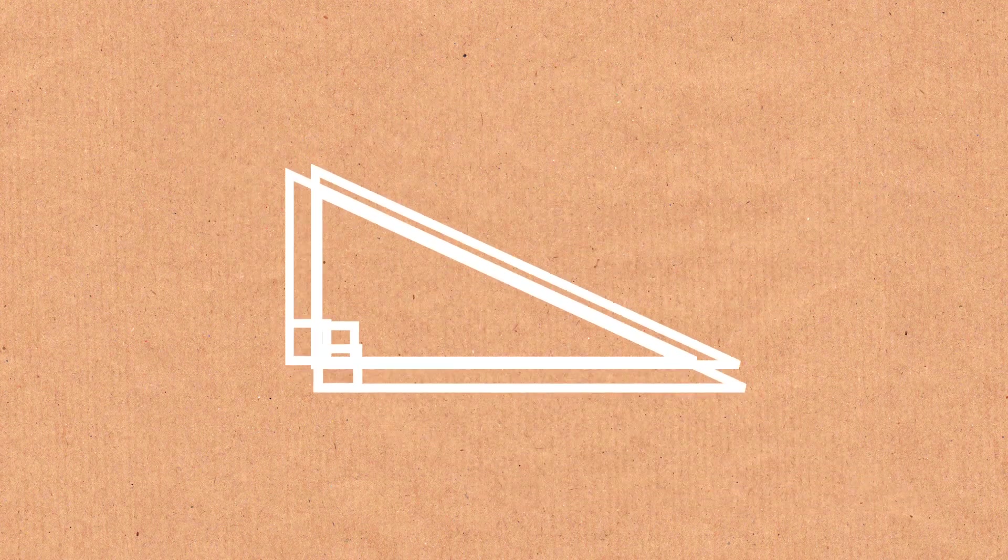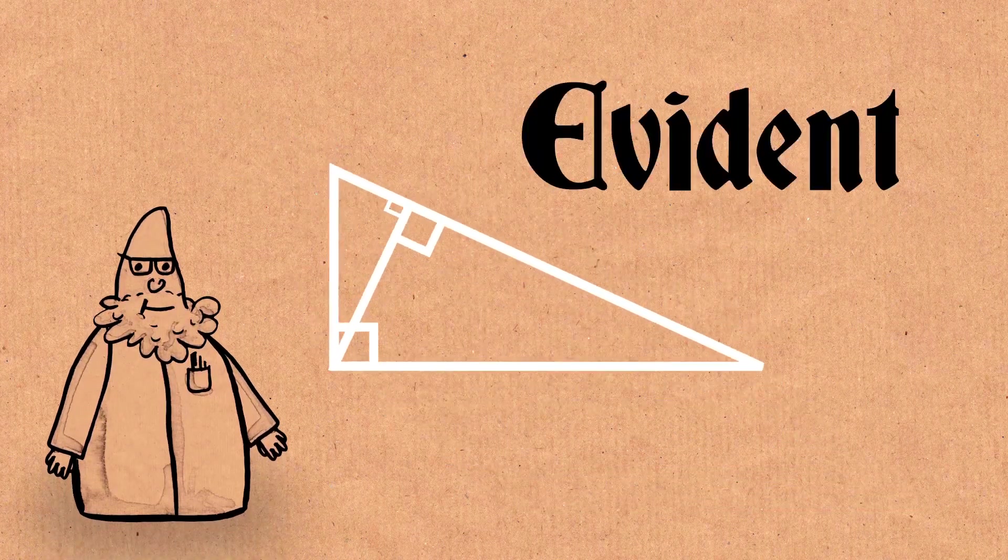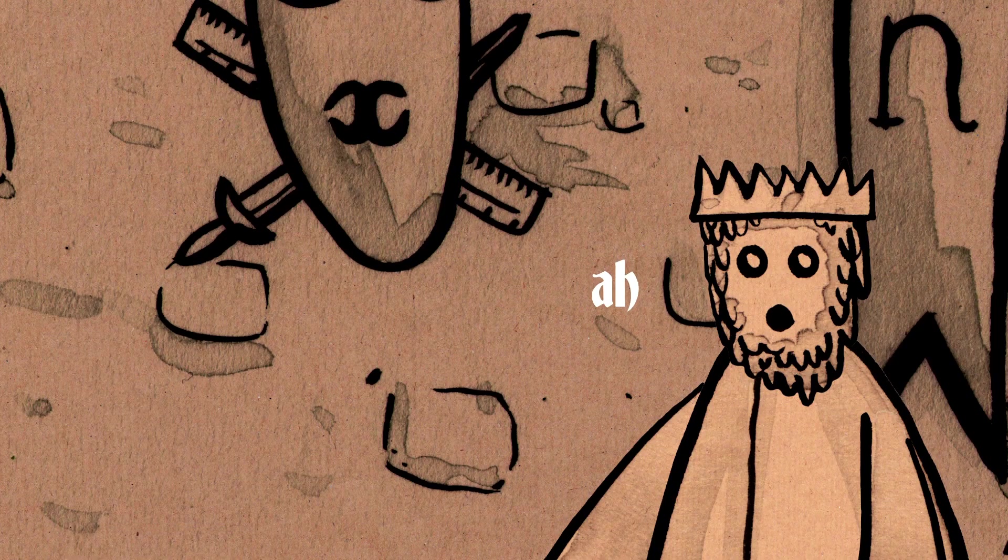And to see that the sum of the two small blobs is equal to the large blob is evident. And the king says, ah.